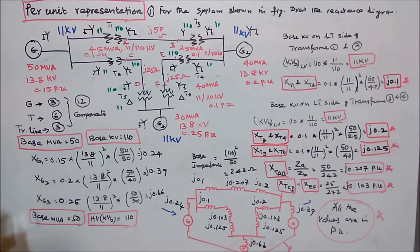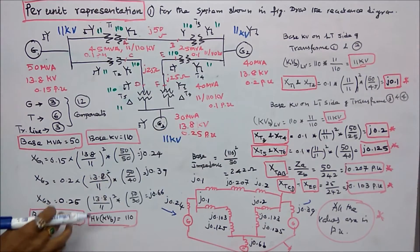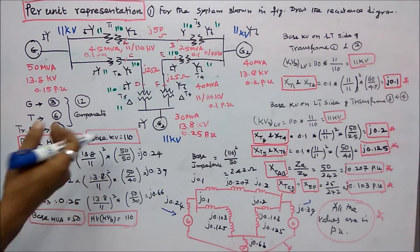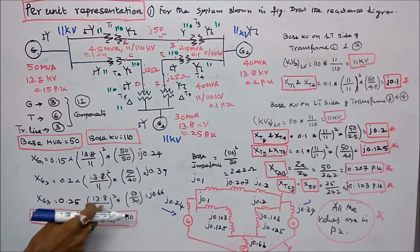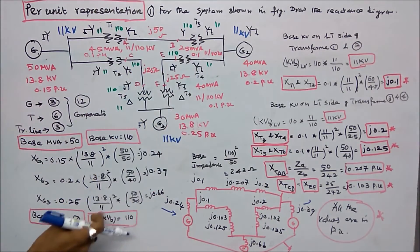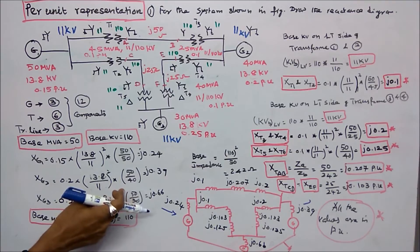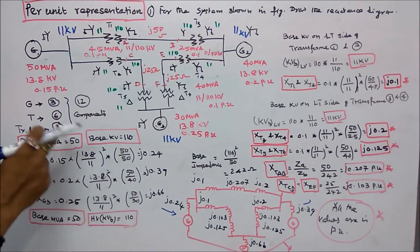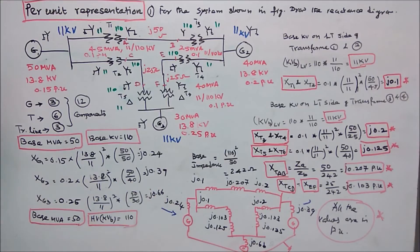Generator 3 given value is 0.25 per unit reactance. New per unit = 0.25 × (13.8/11)² × (50/30) = j0.66.